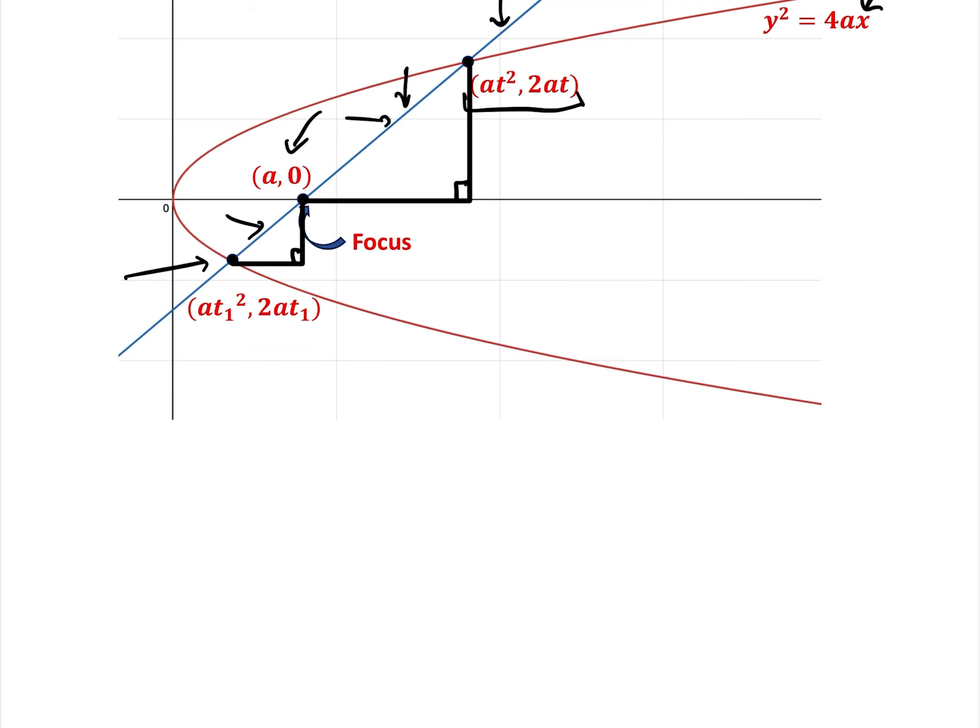So let's have a look at the gradient of the big triangle first. That is 2at minus 0, so that's basically this point, 2at minus 0, the y-axis,